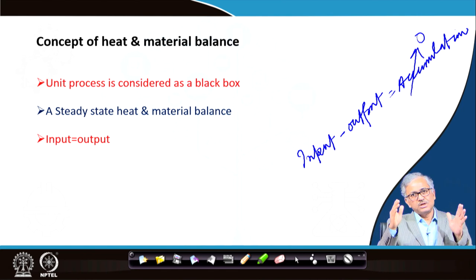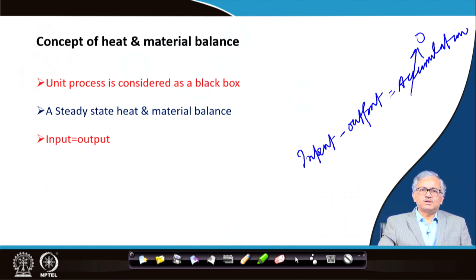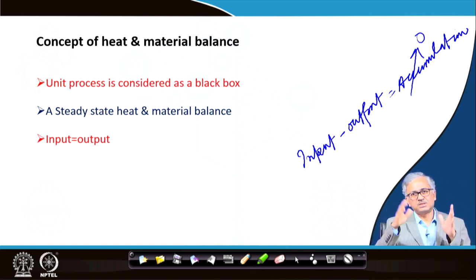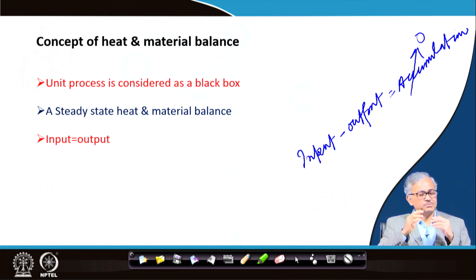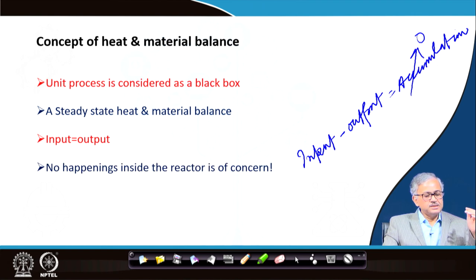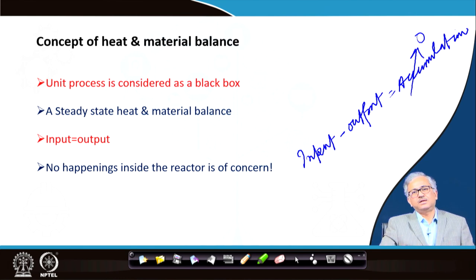We are dealing with the input and output only, and we can equate input and output to predict how much is produced. It is a completely steady-state phenomenon. If something is accumulating inside, you cannot equate input equal to output because of the transient nature of the process. So it must be perfectly steady-state heat and material balance. No happening inside the reactor is of concern here.